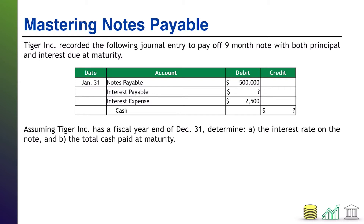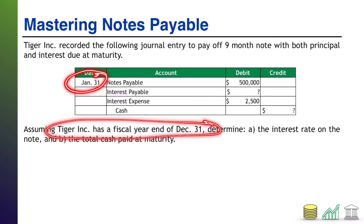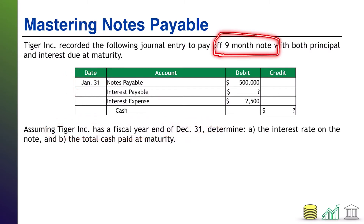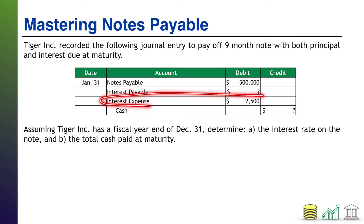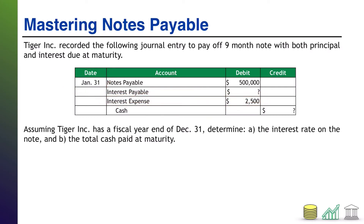All right, welcome back. Notice that Tiger Inc. had a fiscal year end of December 31st, and this journal entry was taking place on January 31st — so it has been one month since the fiscal year end. Anytime you have an interest-bearing item on your balance sheet that crosses a year end, you're going to accrue for any interest from that year as an adjusting journal entry. That means any interest on this note prior to December 31st would have already been recorded, and the interest expense in this journal entry is only the interest for the month of January — which means this note has $2,500 of interest per month.